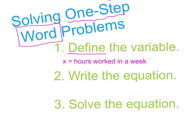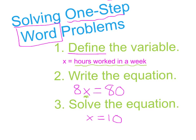Here's an example problem. Maybe we decide to use the variable x, and let's say x represents the hours worked in a week. Now to write an equation — let's say we make $8 an hour, so $8 times every hour that we work, and in a week we make $80. So we would be solving for how many hours we worked. You divide both sides by 8 to get x equals 10.